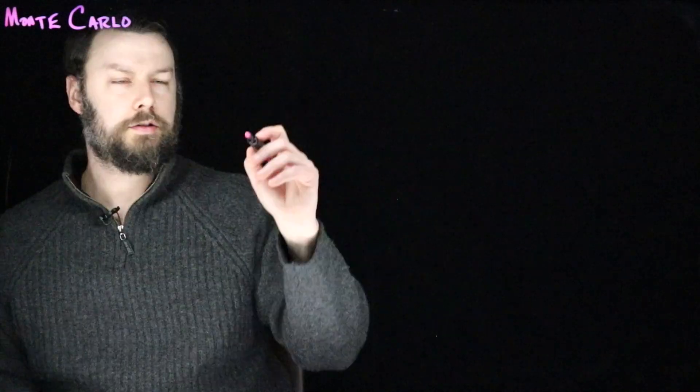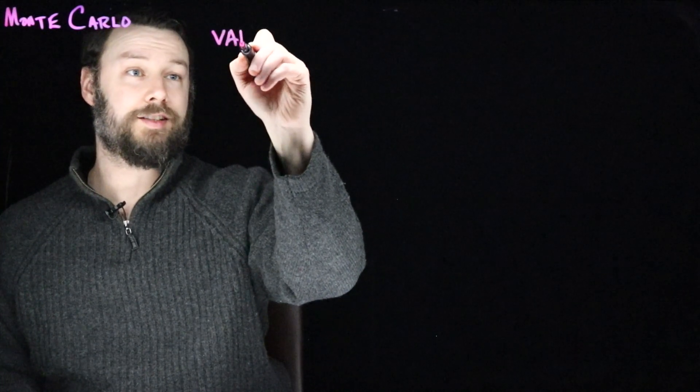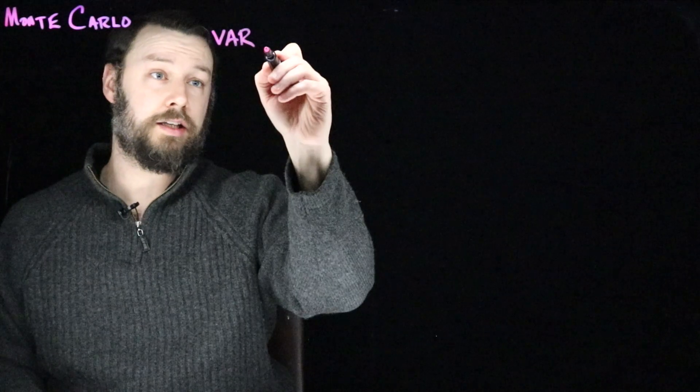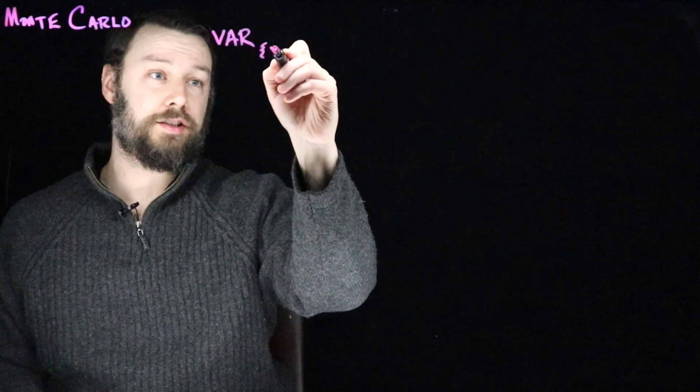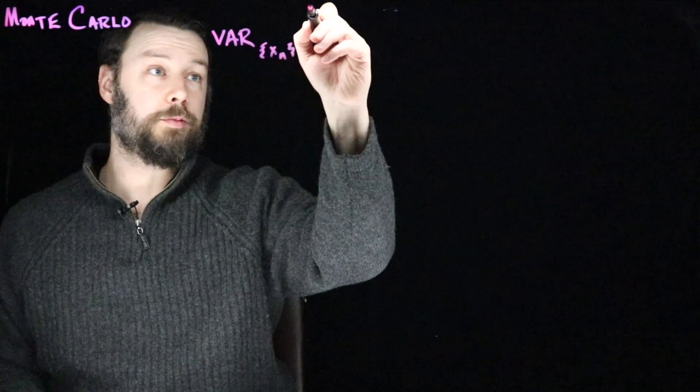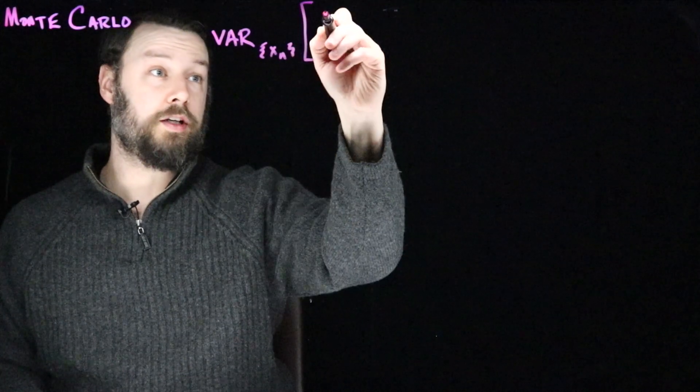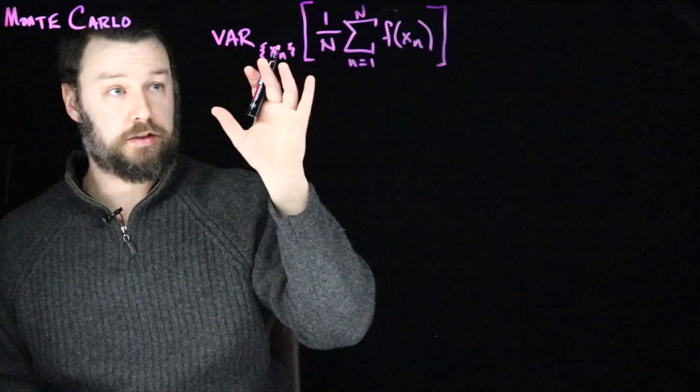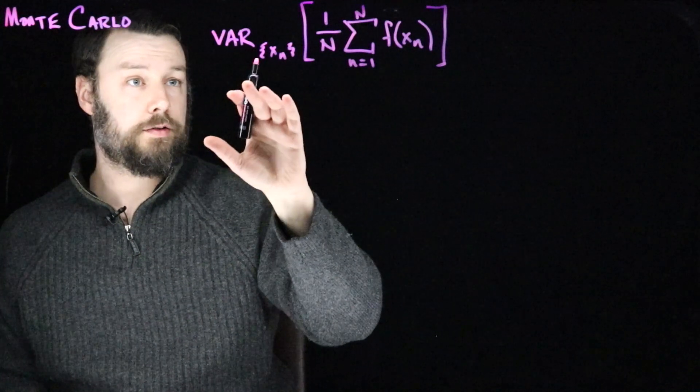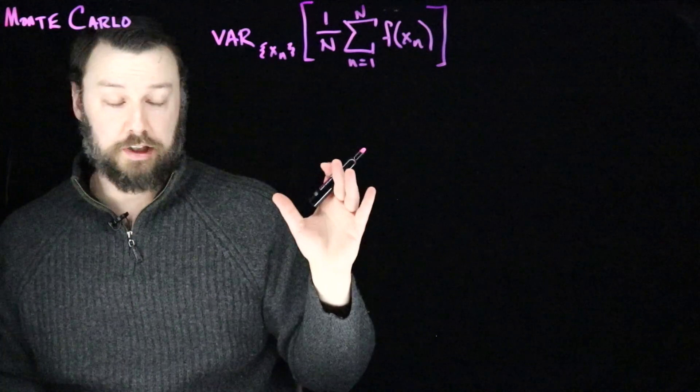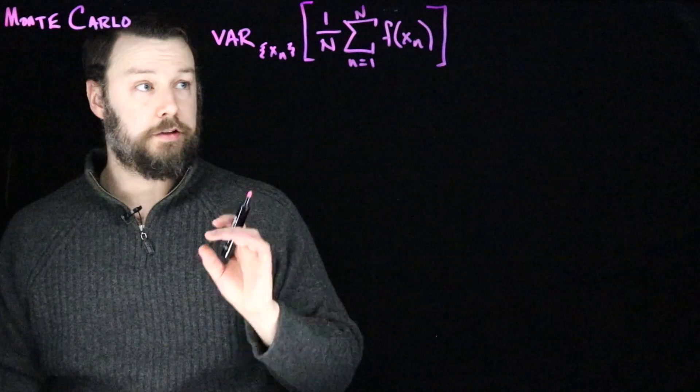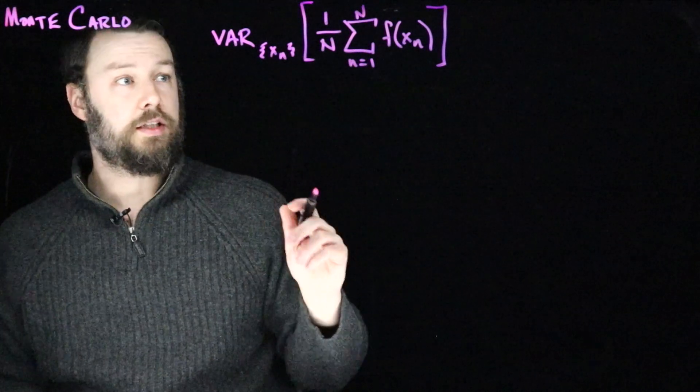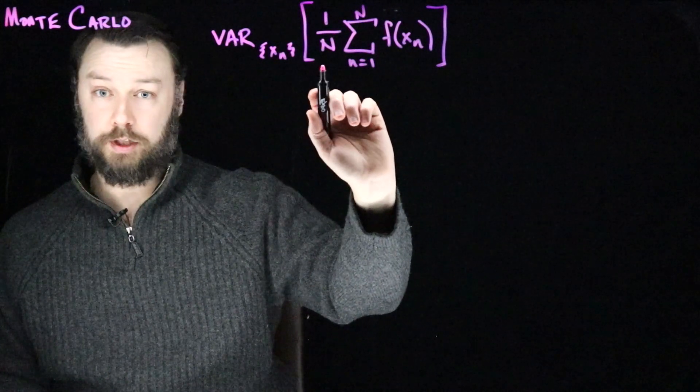A little bit more interesting is the variance. So now let's think about the variance. I'm going to write like this, the variance again under this collection of variables, of this quantity, this average. So just like last time I looked at the expectation, now I'm going to write the variance under the possible samples we might get.